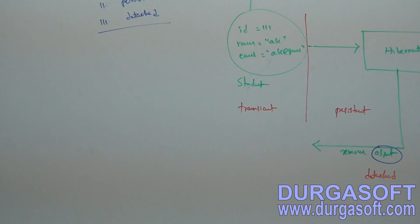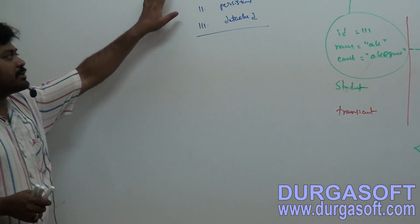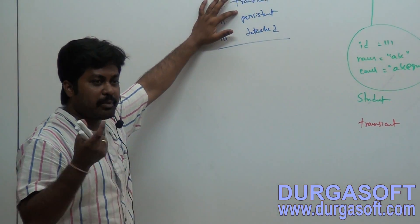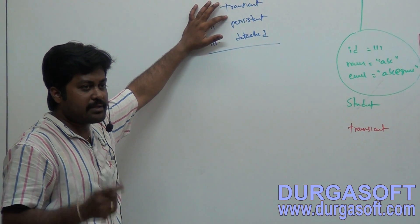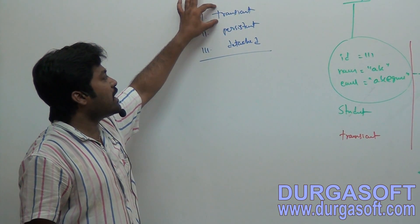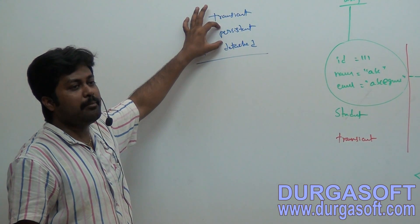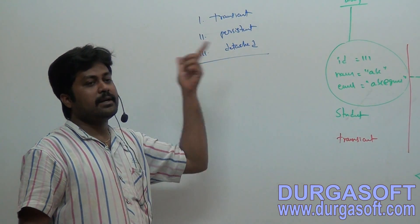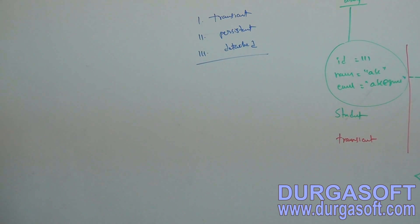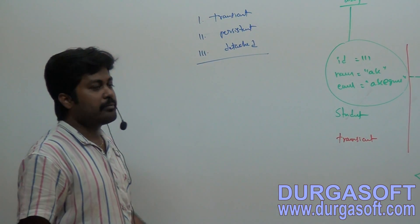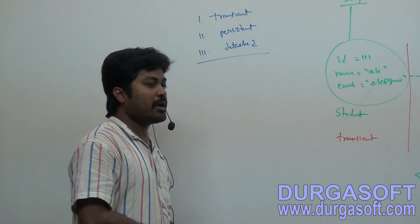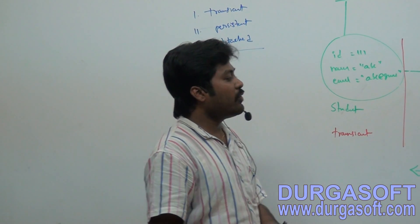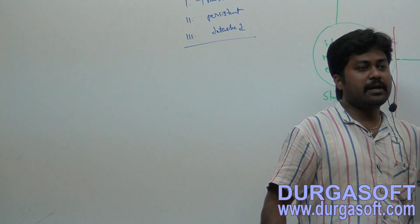These three object scopes we have: transient scope, persistent scope, and detached scope. Transient means a simple, normal Java object. If you add your normal Java class object to Hibernate, it becomes persistent. If you remove it from Hibernate, it becomes detached. So these three object states we have: transient state, persistent state, and detached state.